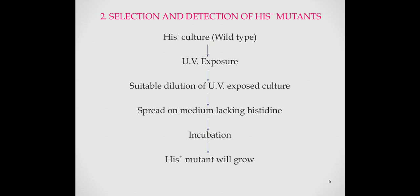The second example is selection and detection of histidine positive mutants. The histidine positive mutants are the mutants that synthesize their own histidine. To select and detect histidine positive mutants from a histidine negative population, histidine negative cell suspension is exposed to mutagen to increase the rate of mutation. A suitable dilution of the mutagen-exposed culture is spread on solid medium lacking histidine. The plates are incubated at suitable temperature for 24 hours. The histidine positive mutants will grow by synthesizing histidine and form colonies that can be detected easily, while histidine negative cells are unable to synthesize histidine and fail to grow and form colonies.